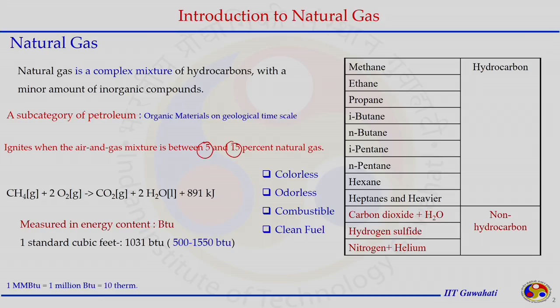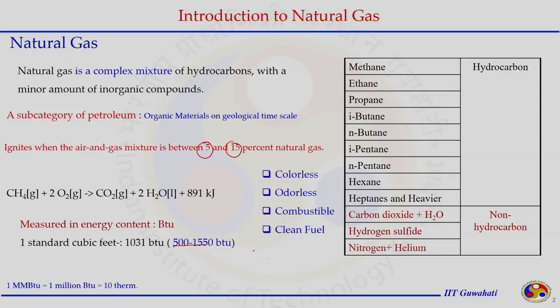In general, energy is measured in BTU, and one standard cubic foot of natural gas gives between 500 to 1550 BTU depending on composition. The reaction shown is for methane because it is the dominating compound, but higher carbon number hydrocarbons produce more energy. Non-combustible non-hydrocarbon gases reduce the energy content. Another common unit is therm, which equals 1 million BTU (1 MMBTU).